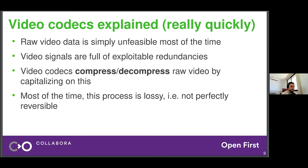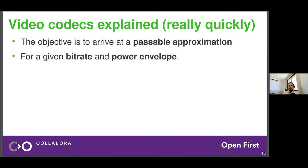Most of the time this compression process is lossy — meaning if you have raw video from a camera and you compress it, when you decompress it the result isn't going to be as good as the original. This is the whole trade-off: you want to compress efficiently and arrive at a passable approximation. The objective is to arrive at a passable approximation for a given bit rate and power envelope.